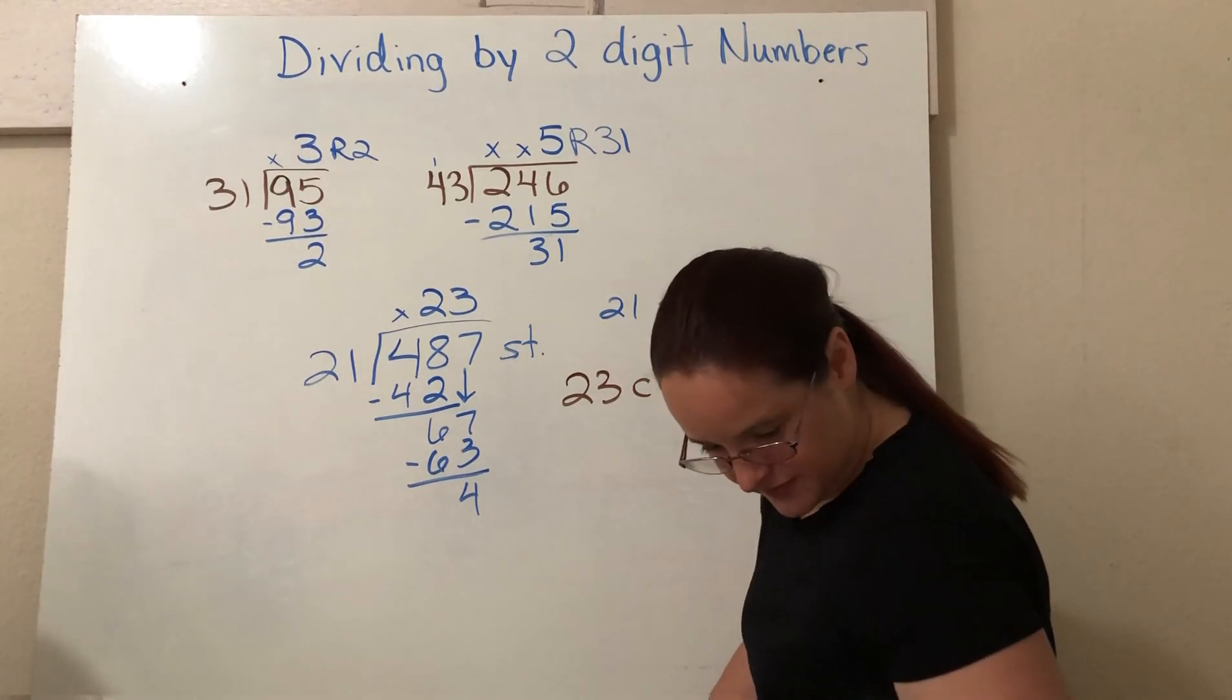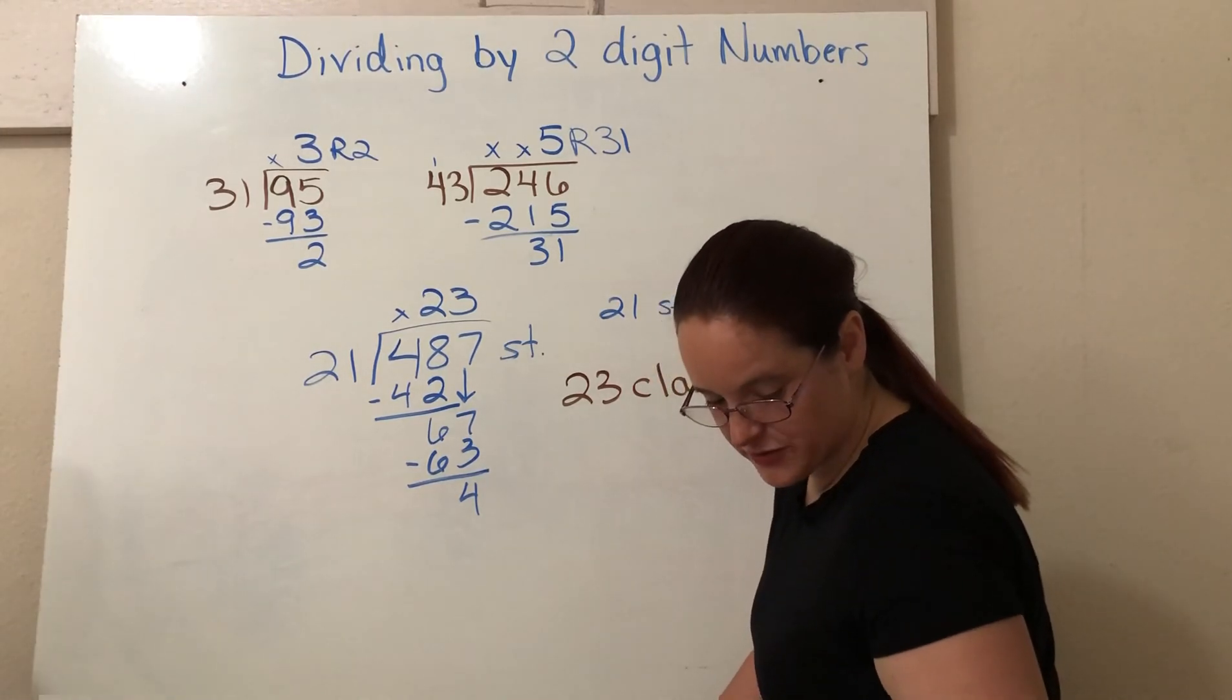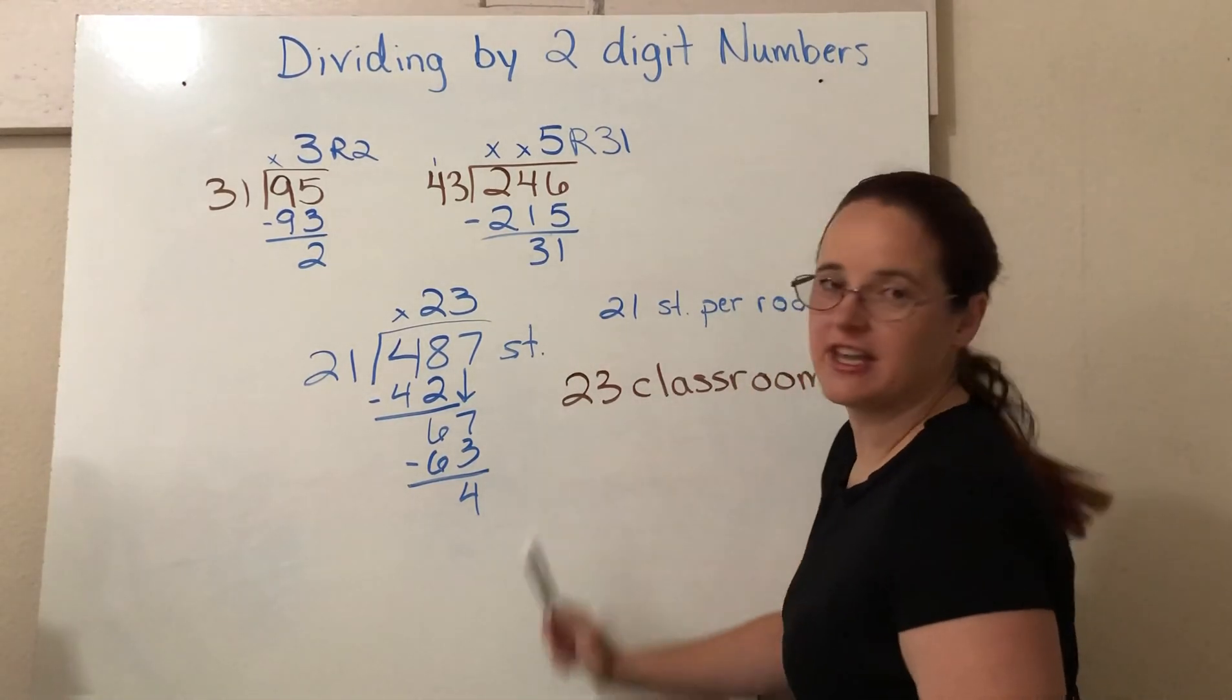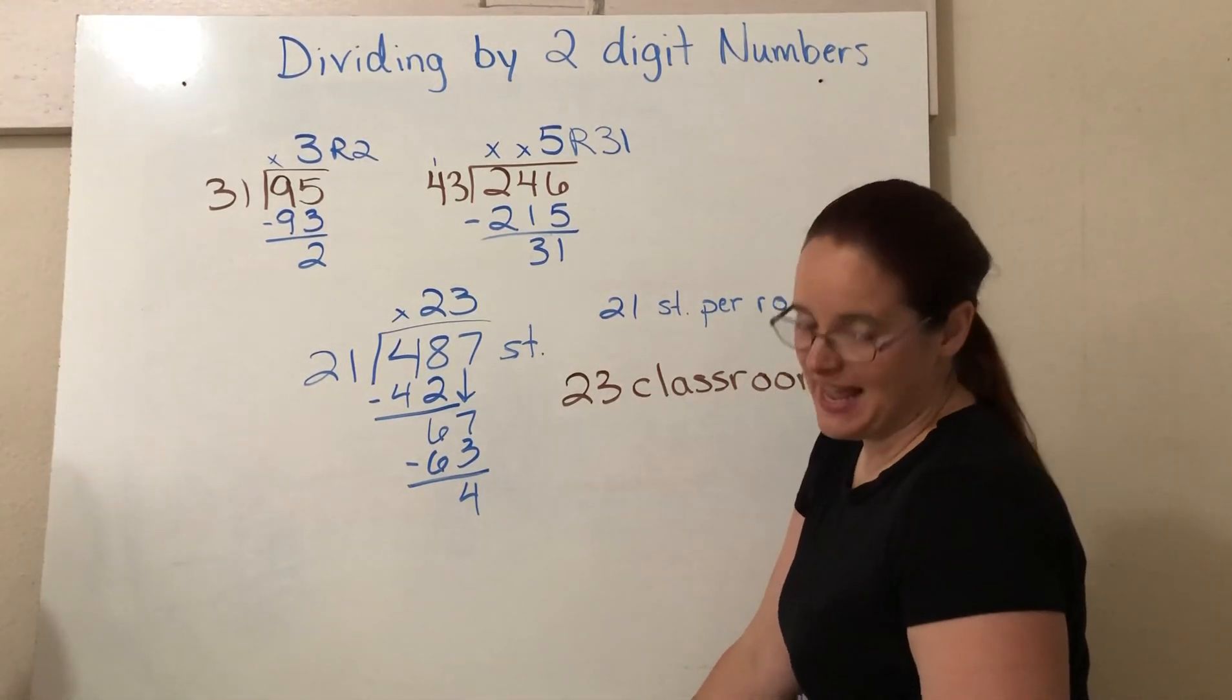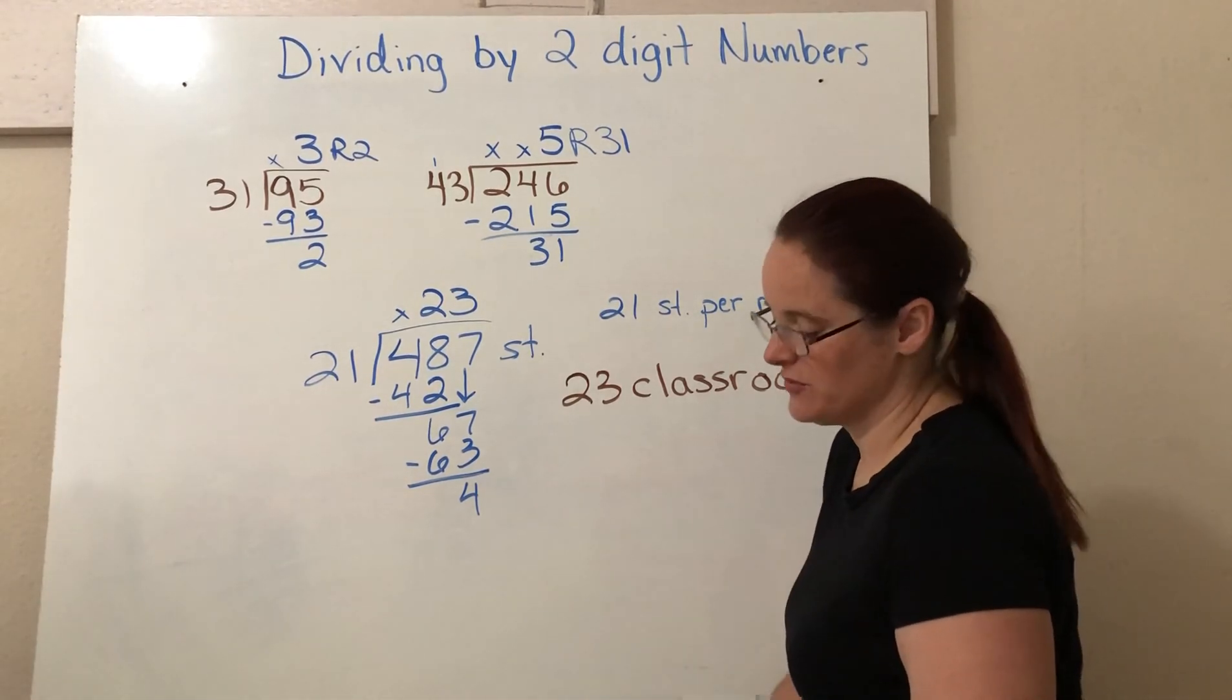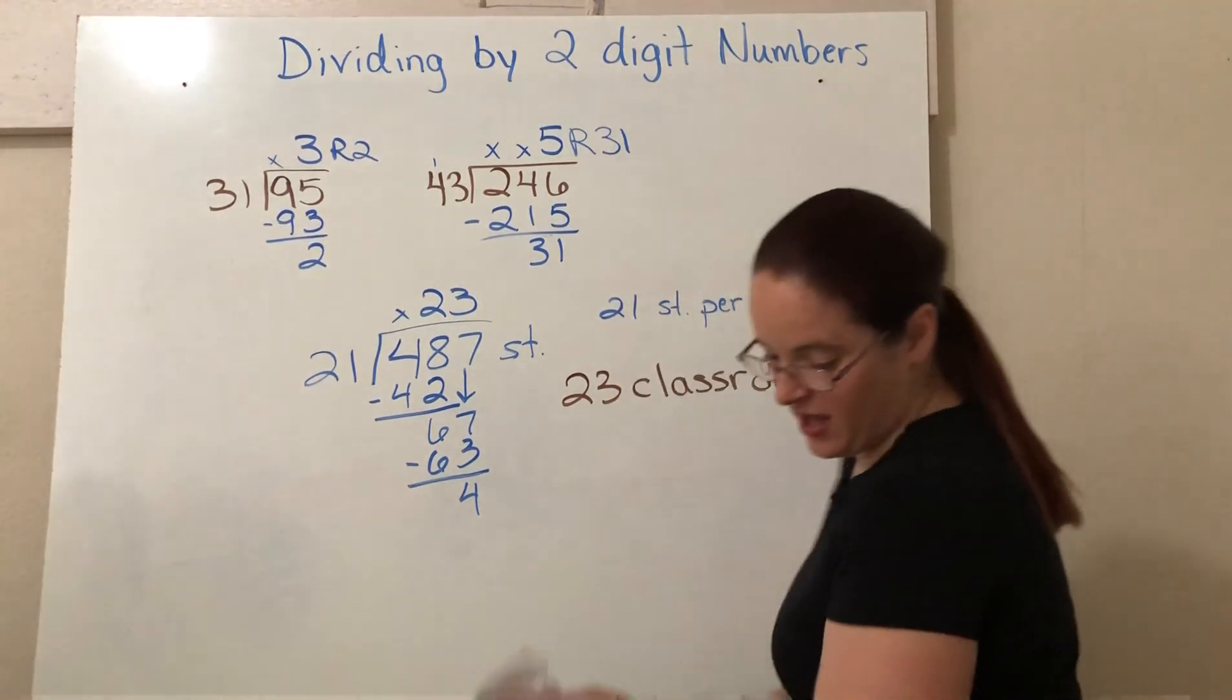So with a word problem, you have to really look at what it's asking for because it can get confusing. So this one says, how many classrooms of students will there be? So this is the number that we're looking for. It does not ask, will there be exactly 21 kids in each classroom? So we got it.